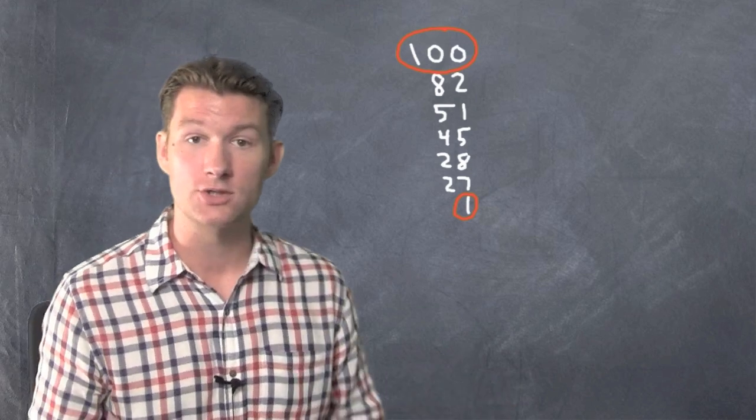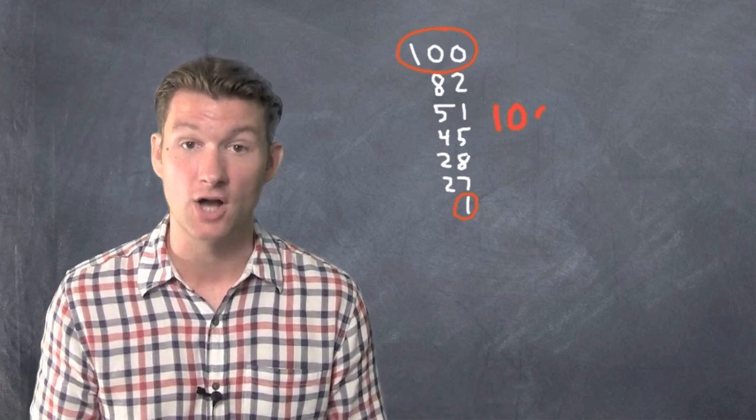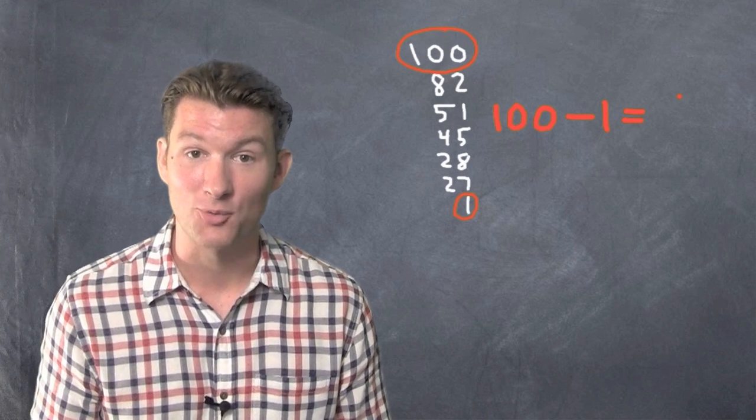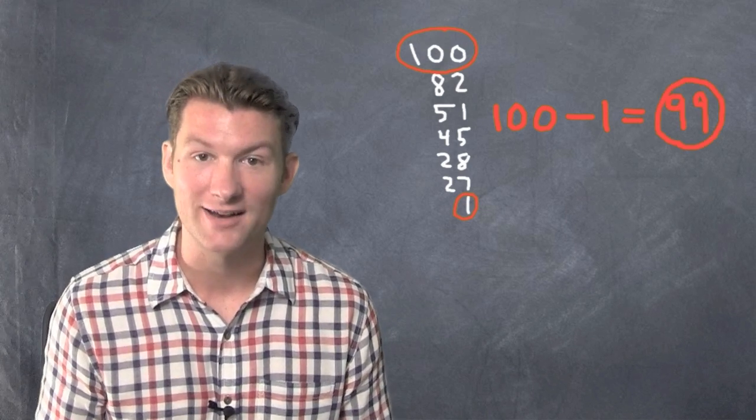So to find the range, we just do the biggest minus the smallest. It's 100 minus 1. The range is 99. That's how you find range.